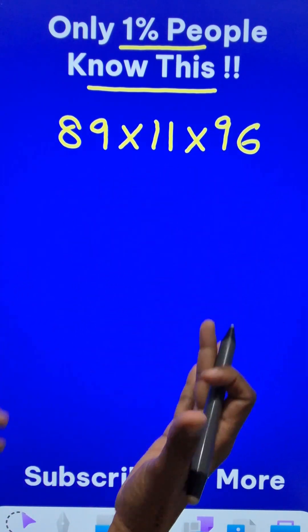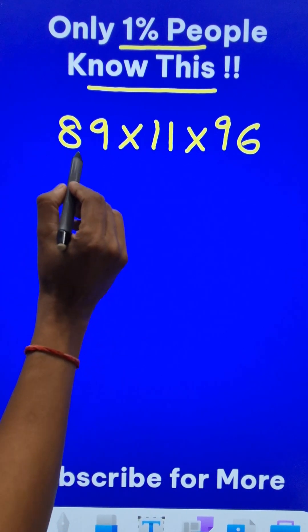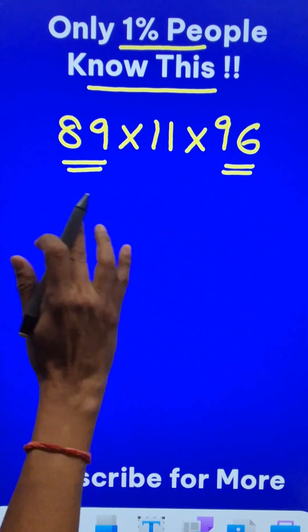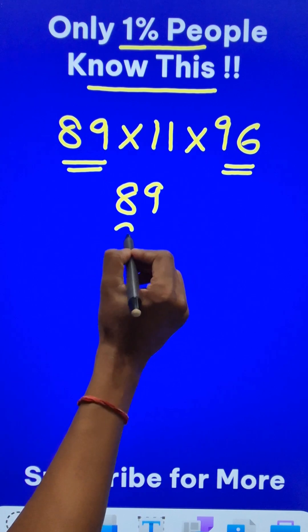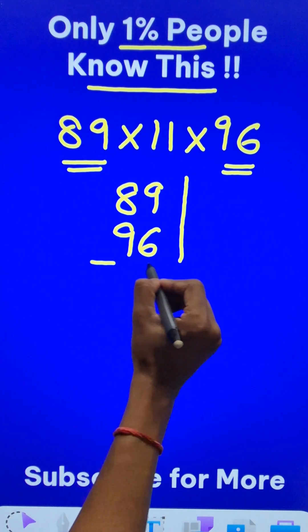The answer is going to be a little bit bigger, right? So what do we do first is, we know that 89 and 96, they are very close to 100. So I am going to take up these two numbers first and look at the way I am writing it.